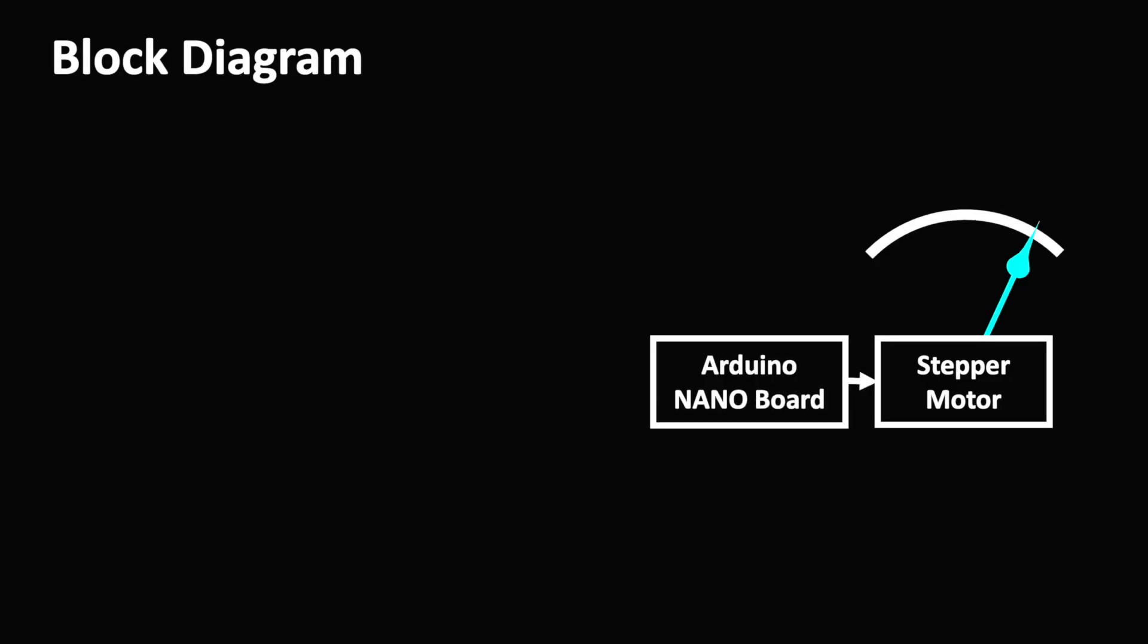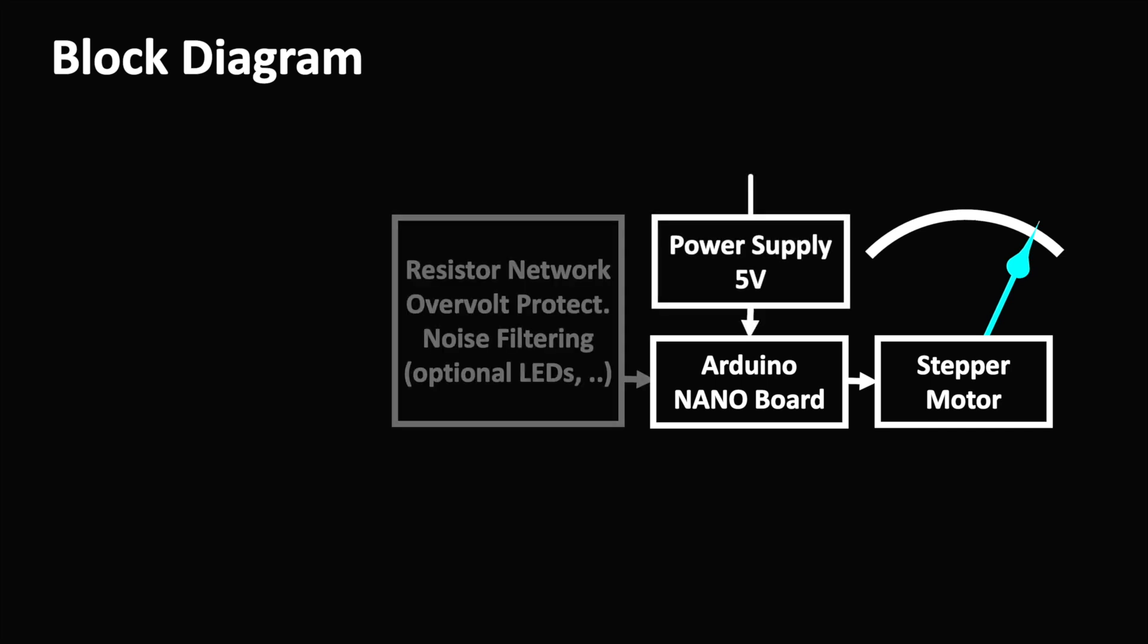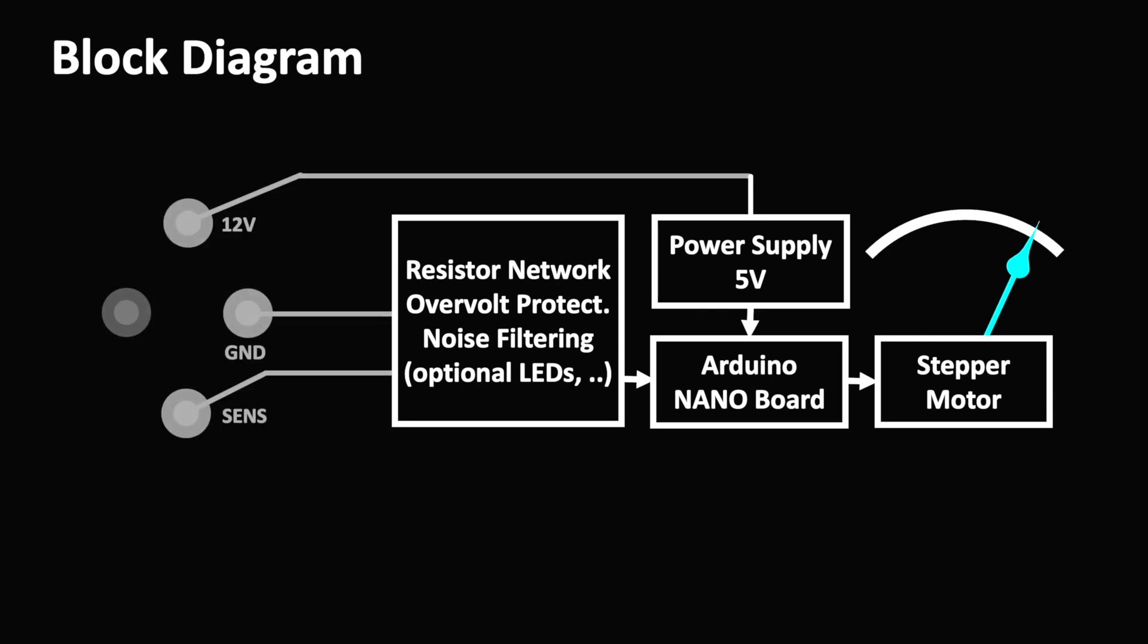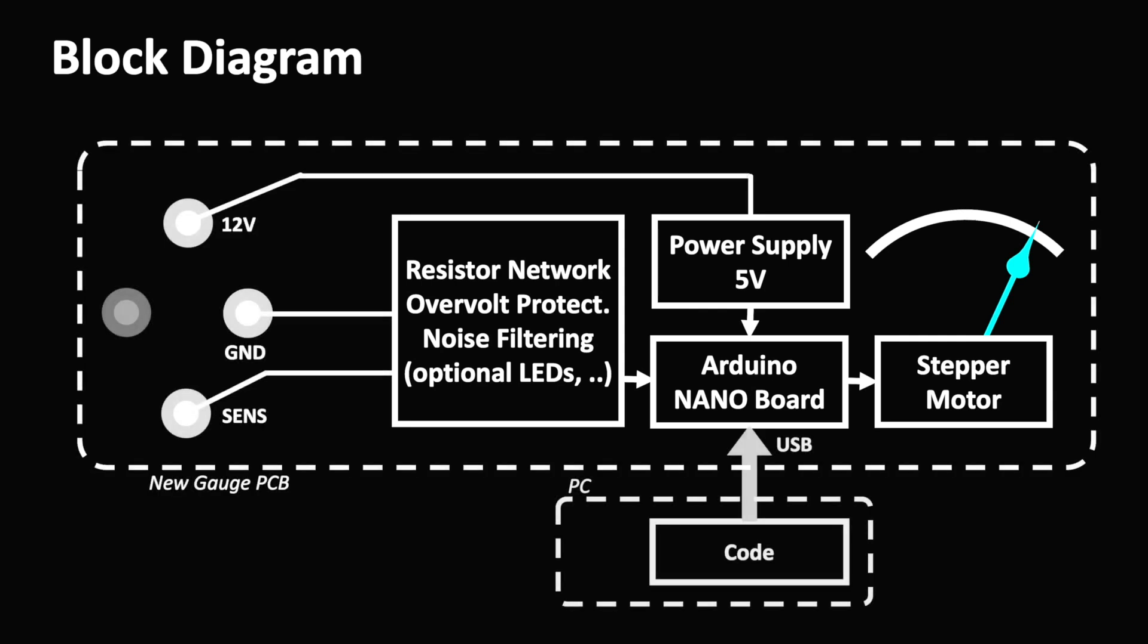The Arduino controlled stepper is fed from the 12V system via a 5V regulator. A network of resistors, diodes and ceramic capacitors is filtering out interference and it protects the processor from overvoltage. The new pointer drive is connected to the original connection terminals where we can foresee a 5V supply for an external sensor module in case we need it.